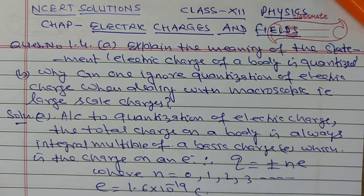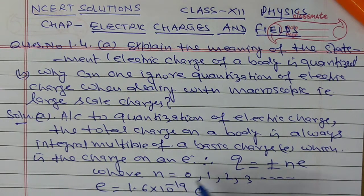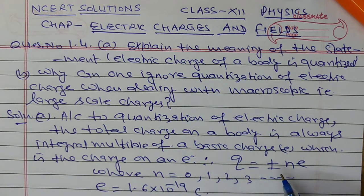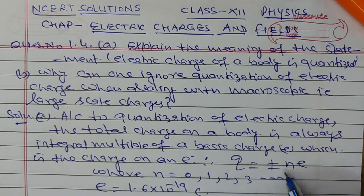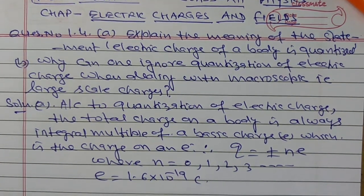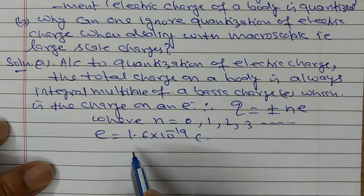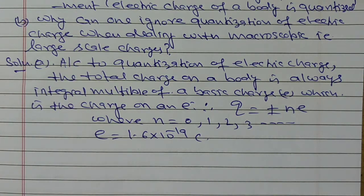According to quantization of electric charge, the charge on any body is always an integral multiple of the basic charge — that is, the charge on an electron. The charge on any body can only exist as an integral multiple of the electron's charge. That is, q = ±ne, where n = 0, 1, 2, 3 and so on, and e is the charge on the electron, equal to 1.6 × 10⁻¹⁹ coulomb.